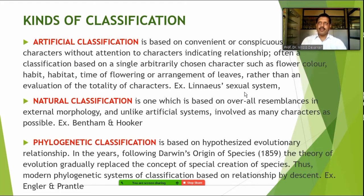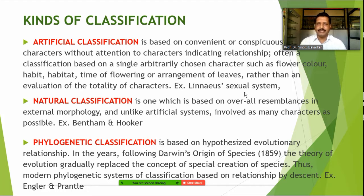When we go to classification systems at various levels, we find there are basically three types: first is the artificial classification system, then natural, and third is the phylogenetic type of classification system.